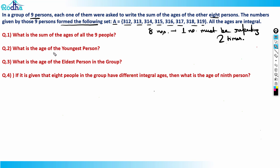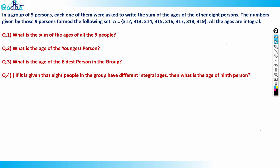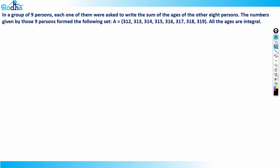So now we have nine people. Let their ages be a1, a2, a3, a4, a5, a6, a7, a8, and a9. These are the ages of the nine people. Now let's make equations — person a1 will say the sum of the ages of the other eight people.